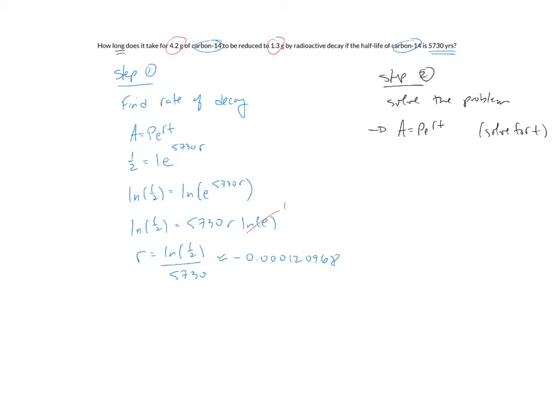So to solve for T, I'll go ahead and I'll take A over P, which equals E to the RT. Once again, I'll natural log both sides. The natural log is in place now so that I can bring down the RT. The natural log of E is 1. And so we've just found out that T equals the natural log of A over P divided by R.